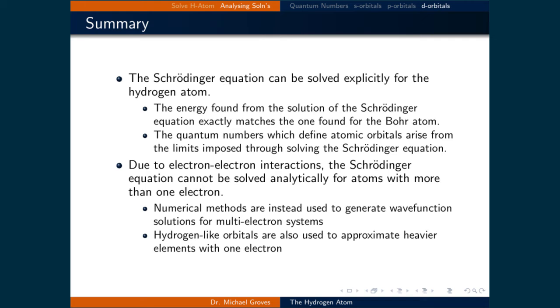In summary, the Schrödinger equation can be solved explicitly for the hydrogen atom. The energy found from the solution of the Schrödinger equation exactly matches the one found for the Bohr atom. The quantum numbers which define atomic orbitals arise from the limits imposed through solving the Schrödinger equation.